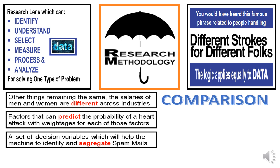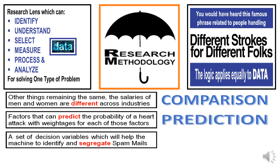A completely different problem would be: factors that can predict the probability of a heart attack with weightages for each of the explanatory variables — they could be obesity, smoking, hypertension, diabetics, and what not. The key word here is 'predict,' and the problem is obviously a prediction problem. How do I predict, given the behavior of a set of variables, what could be the probability of a heart attack for a given patient? Obviously, this is very different from the previous problem of comparison.